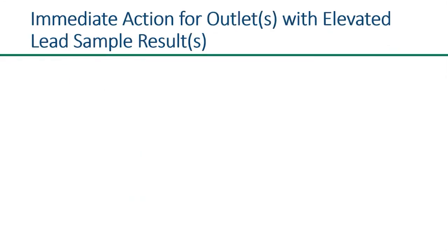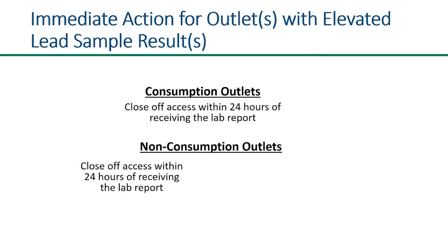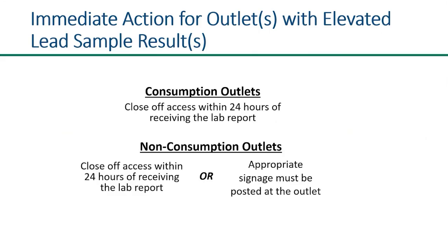There are several actions you will need to take once you receive the laboratory report with elevated lead results. The most immediate action your school will need to take is to close off access to any outlets with an elevated lead result within 24 hours of receiving the laboratory report. However, if the outlet is not used for consumption, then you may instead post appropriate signage at that outlet. Please see MDE's Rules and Example Signage for Outlets document on our website or linked in the description below for more details regarding when and where to appropriately post signage.